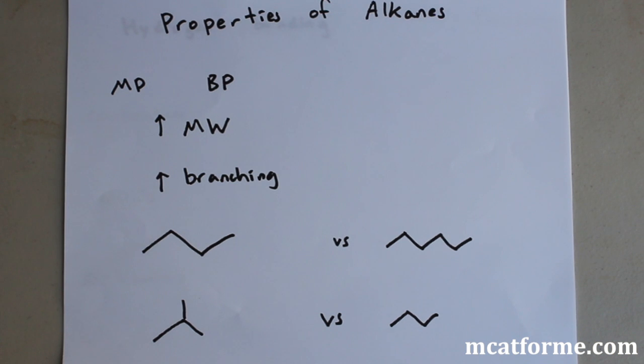Today we're going to be going over properties of alkanes. The most important properties are melting point and boiling point. These can be affected by a lot of different things, but we're just going to go over the two basic ones: molecular weight and branching.